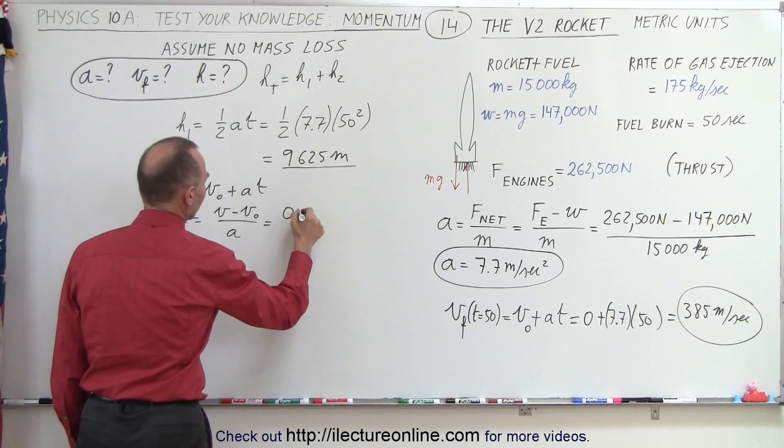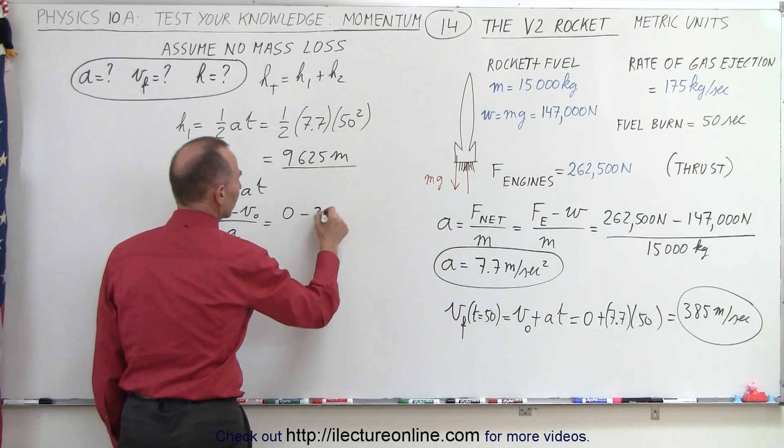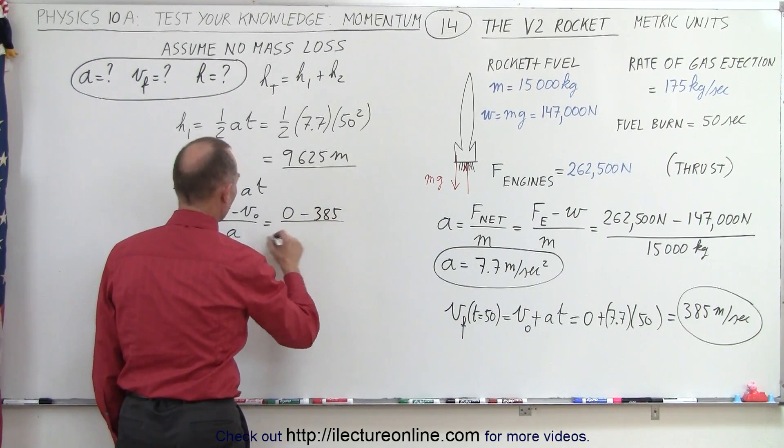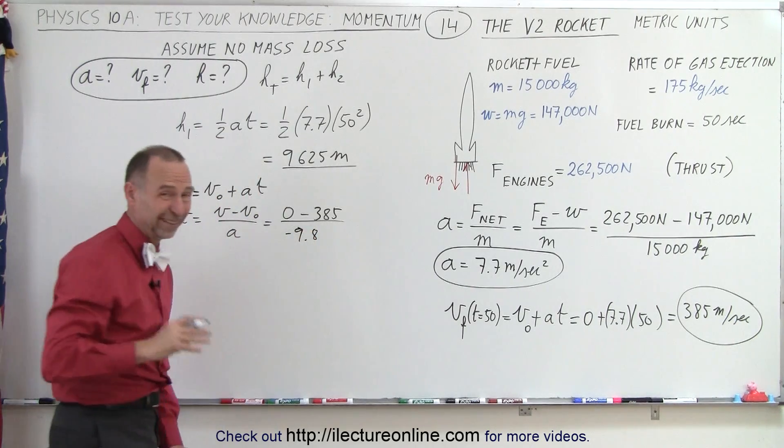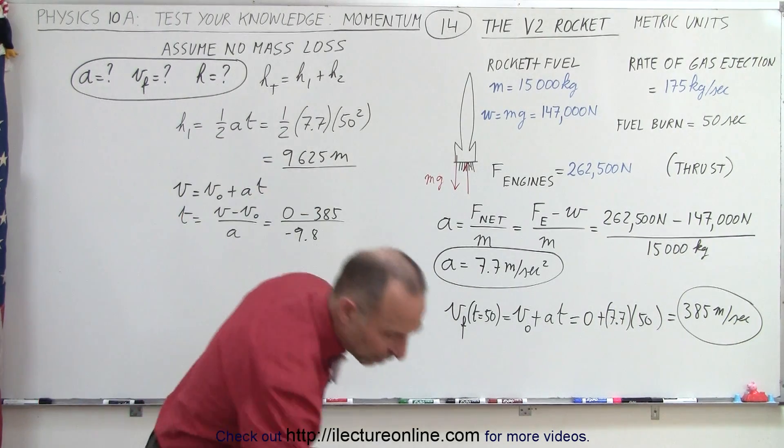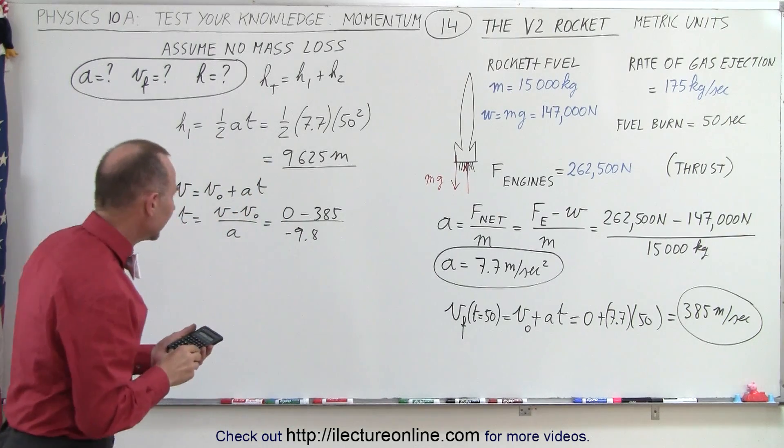The final velocity is 0. The initial velocity is 385. And acceleration is 9.8 meters per second. Of course, that's a negative 9.8, which tells us how much longer it will be in the air.